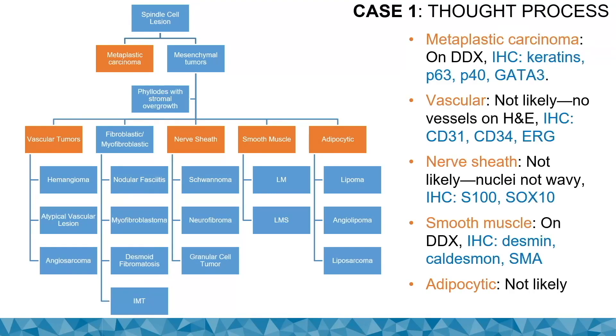So what do we do when we have a spindle cell lesion? The first three things you do is make sure it's not metaplastic carcinoma.